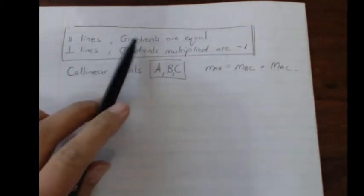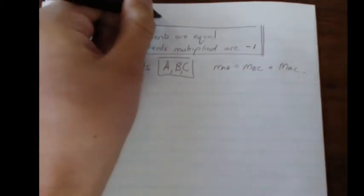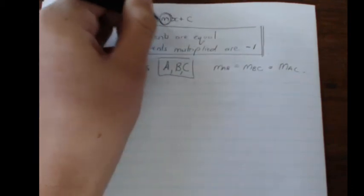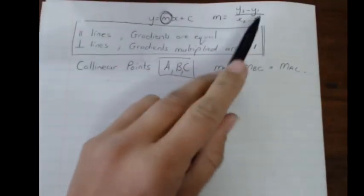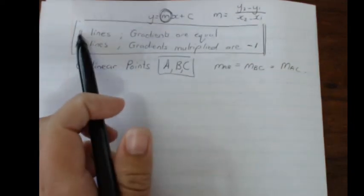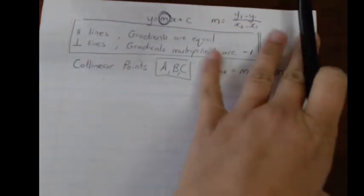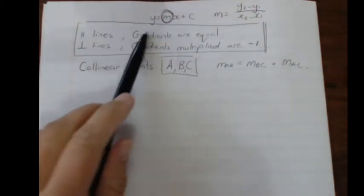Parallel lines have the same gradient. If you think of y = mx + c in straight lines, m is the gradient. We also work with the gradient formula, which is difference in y over difference in x — the gradient between two points. So if I work out the gradient of one line and another line, and the two gradients are equal, I know these lines are parallel. Or if I have information that the lines are parallel, I can assume the gradients will be the same.